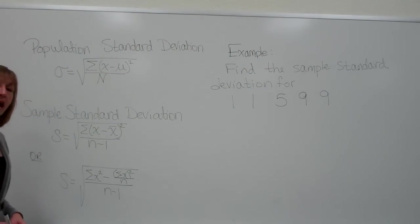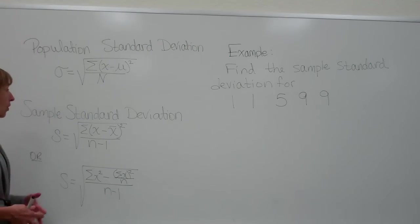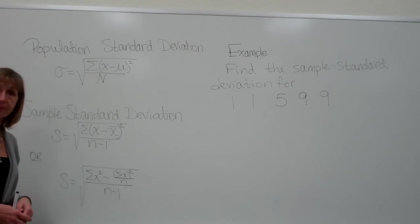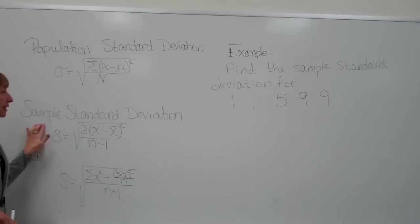One of the measures of how data is dispersed away from its center is called the standard deviation. Now the standard deviation has a different formula depending on whether we have the entire set of data of interest or whether we have a subgroup of the data of interest in just a sample.